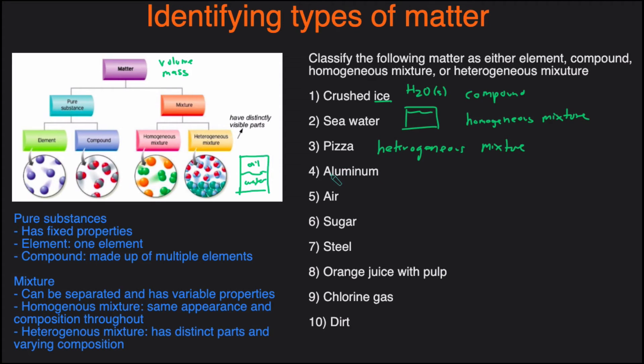Next one, aluminum. We just have one thing, so this is going to be a pure substance, and it's just aluminum. Aluminum is a single element, so this is just going to be an element.